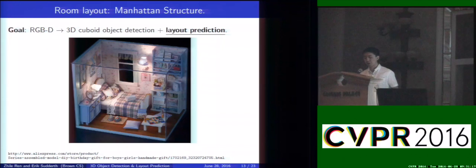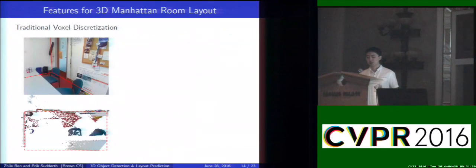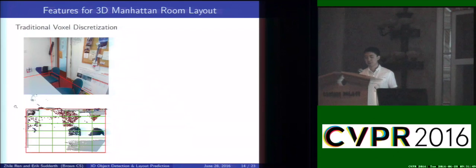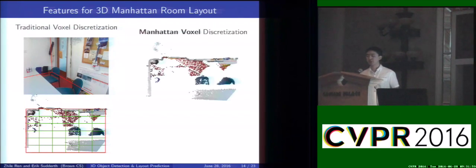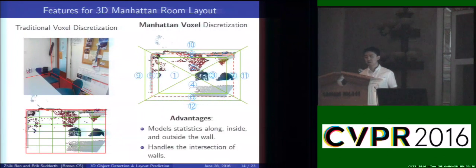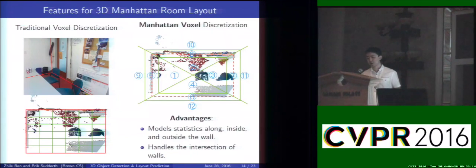Next we switch to layout prediction. To make the room layout prediction, we make the assumption of Manhattan structure — essentially a huge cuboid encompassing the whole scene. A naïve approach would discretize it into voxels and apply structured SVM, but this models redundant information and produces noisy features at wall intersections. So we introduce Manhattan voxel discretization: starting from a layout prediction, we shrink and enlarge it a little bit, connect the diagonals, and discretize the scene into 12 parts. By doing this, we can model the statistics along the inside and outside of the prediction, and also handle the intersection of the walls perfectly.